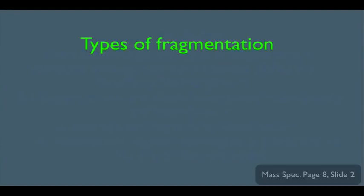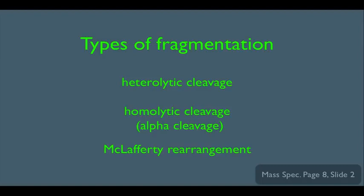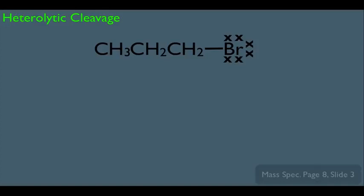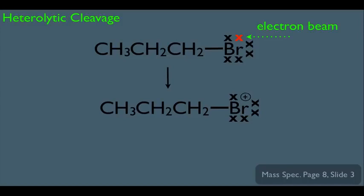Let's start here. We have different types of fragmentation: heterolytic, homolytic (alpha cleavage), and McLafferty rearrangement. Looking at heterolytic cleavage first, we have an alkyl halide. When placed in the mass spec, it's possible the electron beam could dislodge an electron on the Br. If that happens, we end up with a radical cation species, which gives rise to the molecular ion peak.